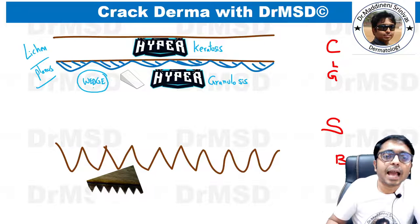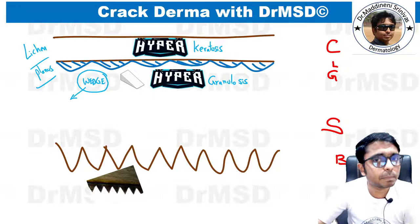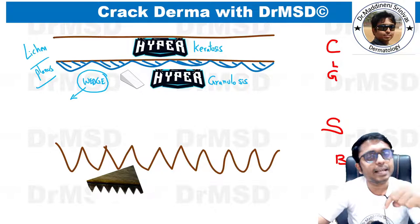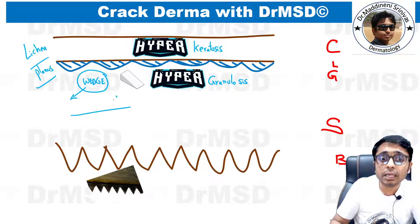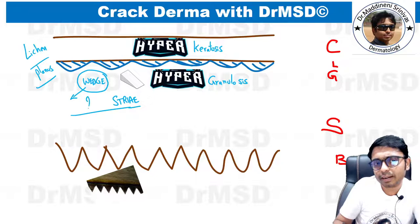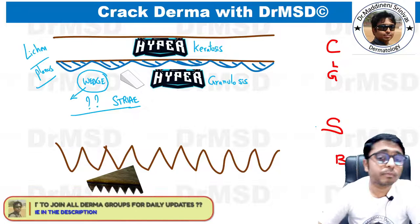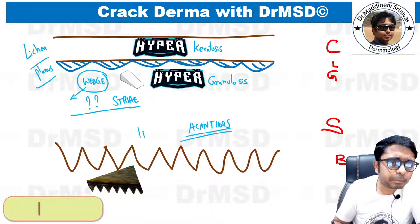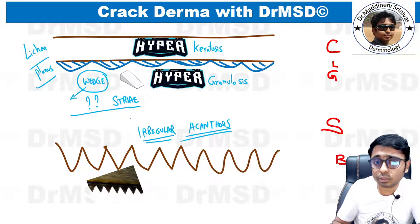This wedge-shaped hypergranulosis seen histopathologically is going to clinically manifest as one very important finding. If you know the name of that finding, do put your answer in the comment section. The suffix used is 'stria' — try to identify the prefix. In the next layer, stratum spinosum, we see thickening called acanthosis. Importantly, this is the irregular variety of acanthosis — irregular acanthosis — which is a very important exam point.